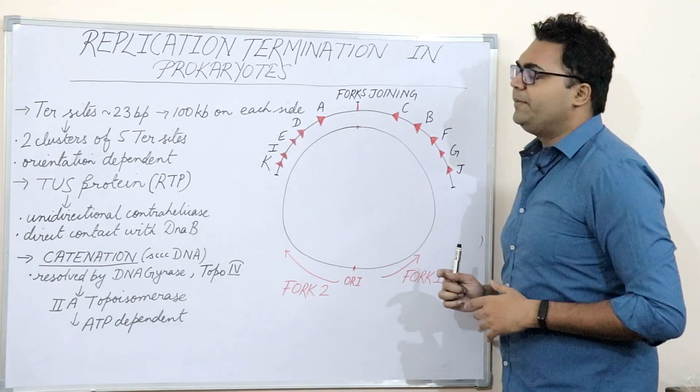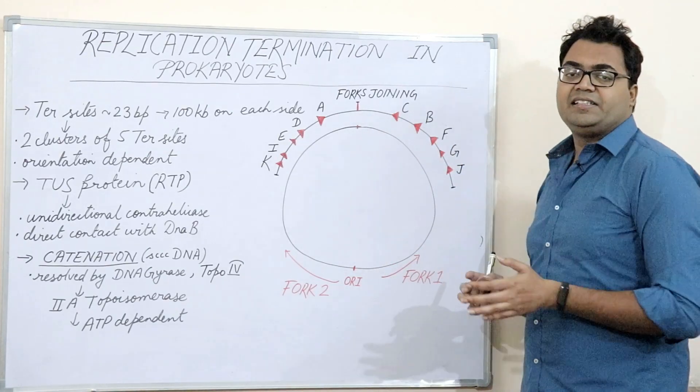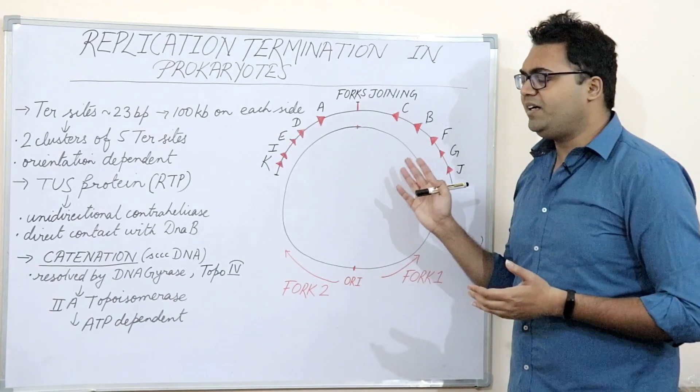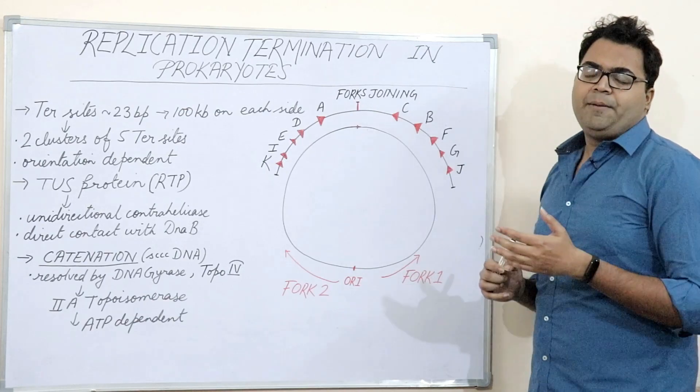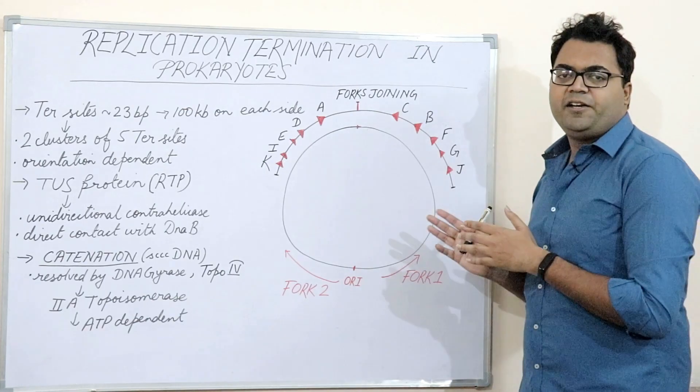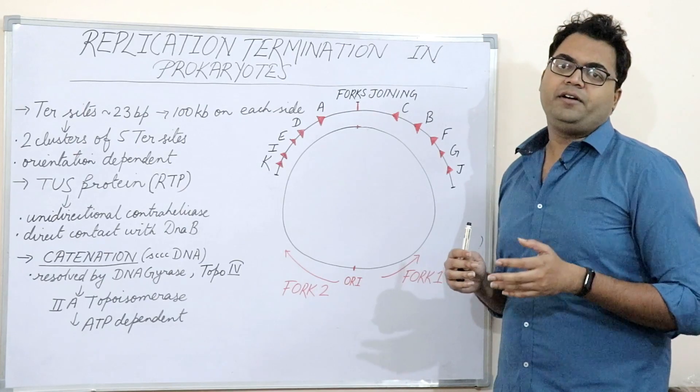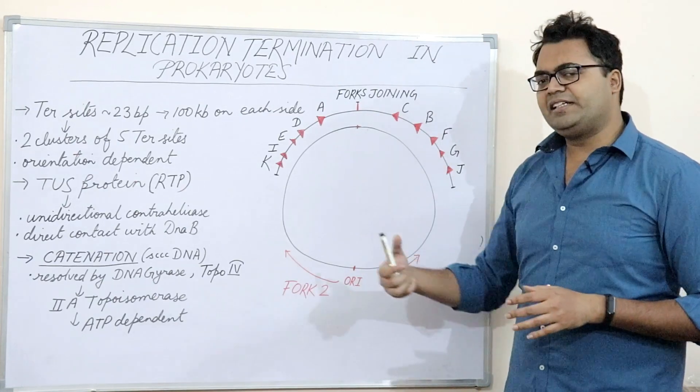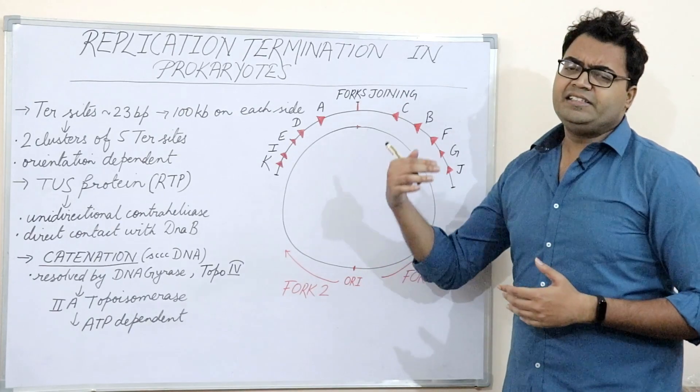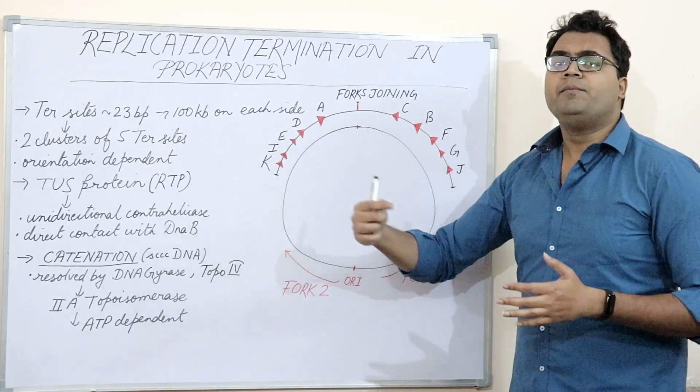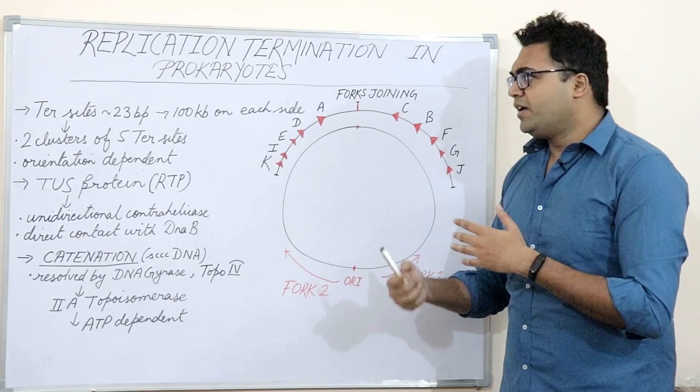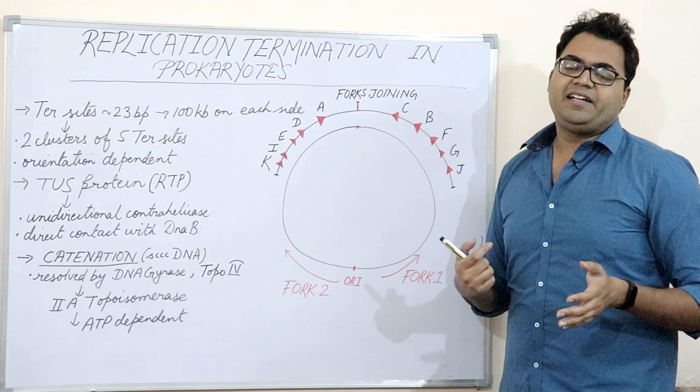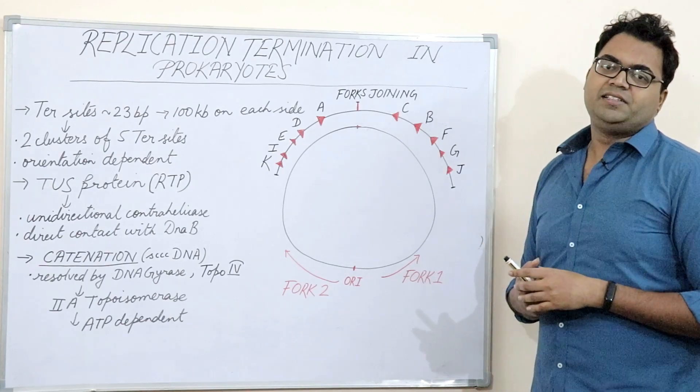So, that is about how the replication termination takes place. That is all the conceptual finesse that you require to comprehend this part. I hope you were able to comprehend it completely. If you have any queries, any doubts remaining, kindly do not hesitate to post it on the comment section below. And if you have any queries related to the elongation and initiation part, do watch my previously posted videos. If you find the content relevant, then kindly hit the like button and also subscribe to my channel BiochemADC. Thanks a lot. See you soon.